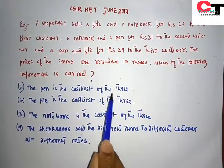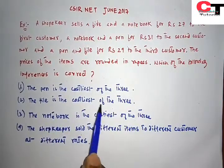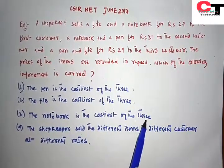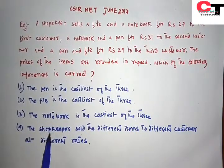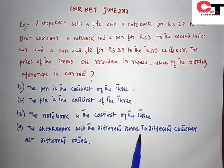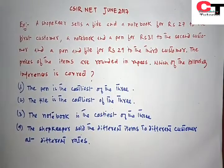The options are: the pen is the costliest of the three, the file is the costliest of the three, the notebook is the costliest of the three, or the shopkeeper sold the different items to different customers at different rates.